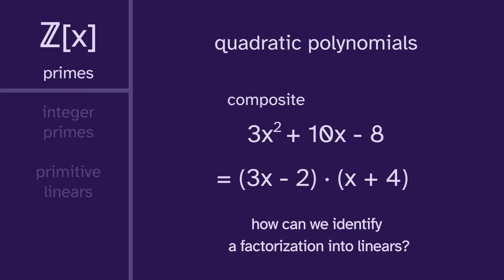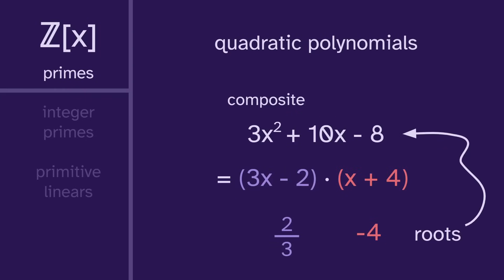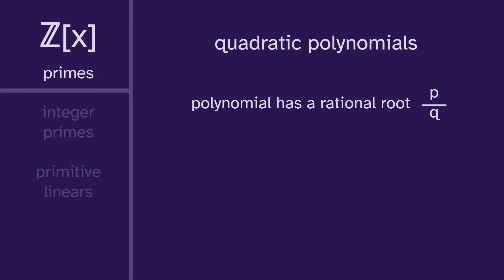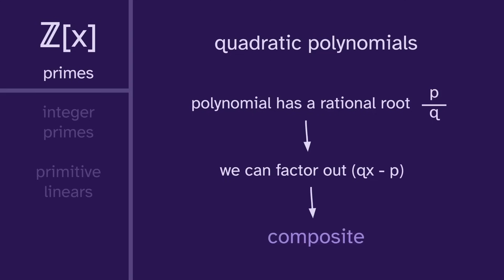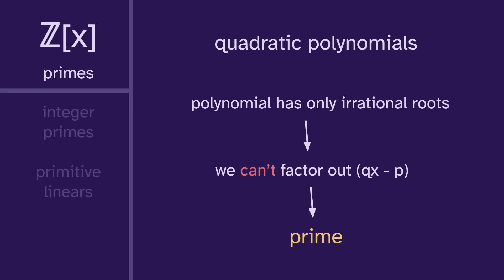So how can we identify this? Well, this factorization tells us that 2/3 and negative 4 are roots of the polynomial — they set that polynomial to zero. We were able to factor because these roots are rational. If a polynomial has a rational root p over q, then we can factor out qx minus p. And since we can factor, it's composite. But if the polynomial has only irrational roots, then we can't factor out anything of that form, meaning that it's prime.